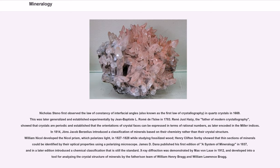In 1814, Jöns Jacob Berzelius introduced a classification of minerals based on their chemistry rather than their crystal structure. William Nicol developed the Nicol prism, which polarizes light, in 1827 to 1828 while studying fossilized wood. Henry Clifton Sorby showed that thin sections of minerals could be identified by their optical properties using a polarizing microscope.